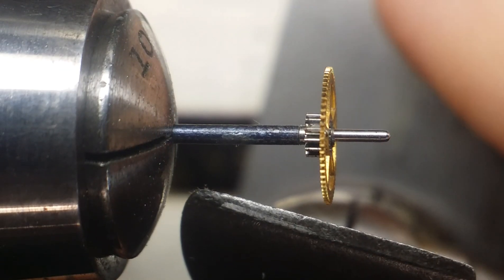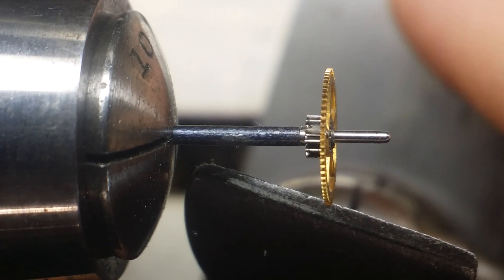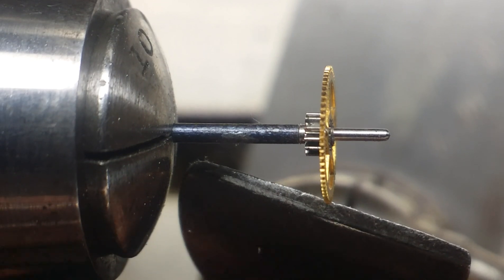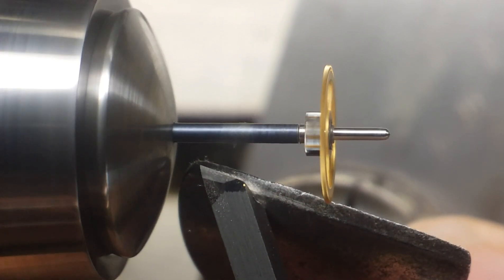At this point, you can see that the blued steel stock that I'm using is the same diameter as the arbor of the original wheel.